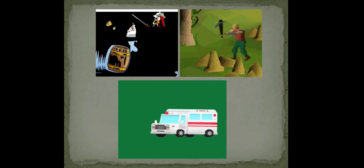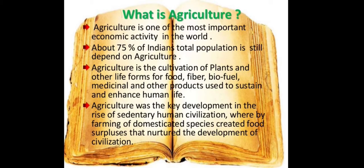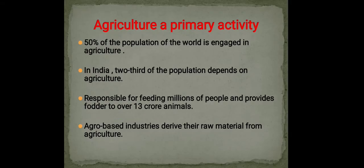Agriculture is an economic activity on which about 75% of India's total population is dependent. It is the cultivation of plants and other life forms for food, fiber, and biofuel. Agriculture is a key development in the rise of sedentary human civilization, whereby farming of domesticated species created food surpluses that nurtured the development of civilization.